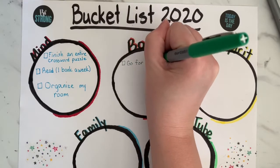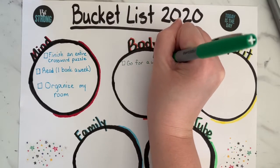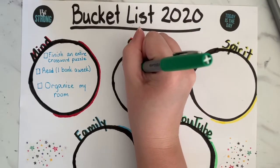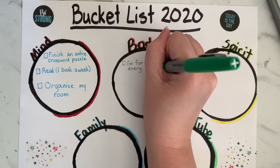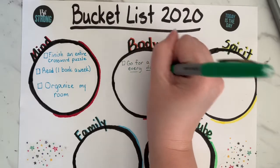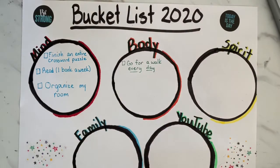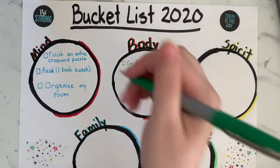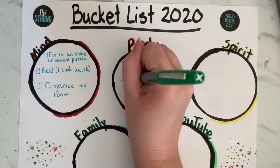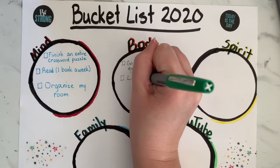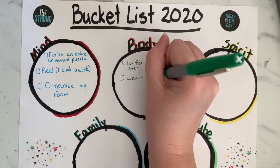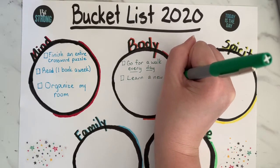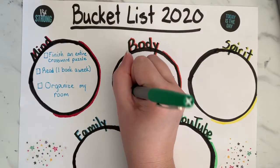For body, the first thing I want to do is go for a walk every day — to get enough vitamin D and sunshine, and also get some exercise instead of just sitting around the house all day. The second thing I want to do is learn a new dance for fun.